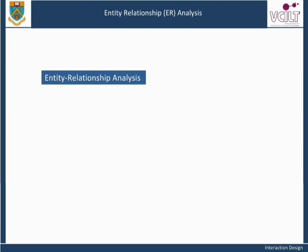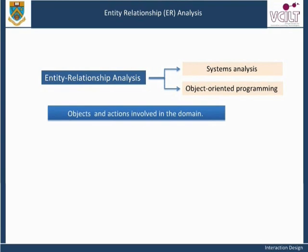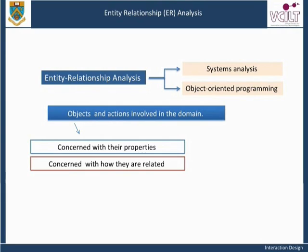Entity relationship analysis is normally associated with systems analysis, notably database design, and more recently, object-oriented programming. So if you have studied these topics, much of this section might seem familiar to you. Be warned, however — the task analysis we are considering here should have a much broader scope than traditional ER modeling, being concerned with the entire work domain and not just the entities that will eventually be represented within the computer system. Like KB analysis, ER analysis starts with the objects and actions involved in the domain. However, as well as the objects, we are concerned with their properties, and the distinction between objects and their properties or attributes is clearer in ER analysis than in KB analysis. Also, we are not concerned with the similarity or otherwise between objects, but with how they are related — for example, which actor in the domain performs particular actions on the objects.